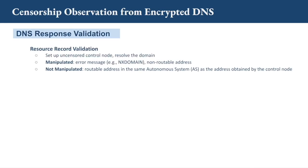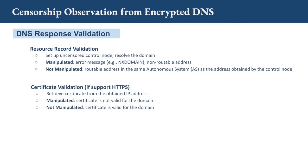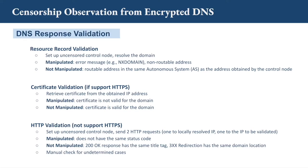We resolve domains at DoT and DoH resolvers and check if the DNS response is manipulated. The validation process contains three steps. First, resource record validation: we set up a control node to resolve the domain as ground truth. If the encrypted DNS response is a DNS error message or contains non-routable IP addresses, we classify it as manipulated. If it contains a routable IP address in the same AS as the control node's result, we classify it as not manipulated. For other routable addresses, we validate through certificate validation or HTTP validation — checking the certificate validity for HTTPS-supporting addresses, or comparing HTTP responses for HTTP-only addresses.